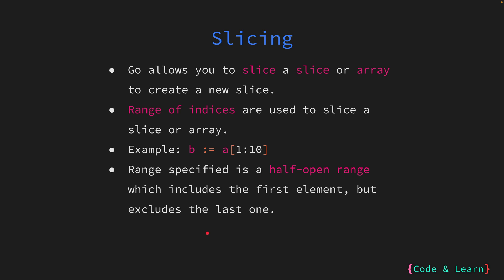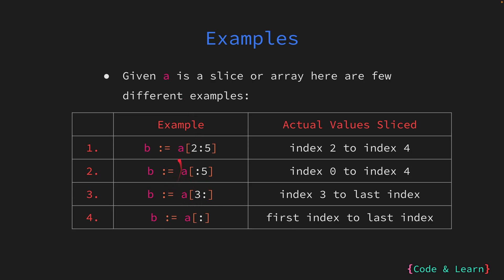Let us look at some examples of different slice expressions. All these expressions will work if a is either a slice or an array. In the first example we have both the starting and the ending index, also known as the upper and lower limit respectively. The starting index is 2 and the ending index is 5, so the resultant slice will have values from index 2, 3, and 4.